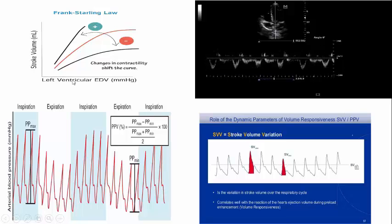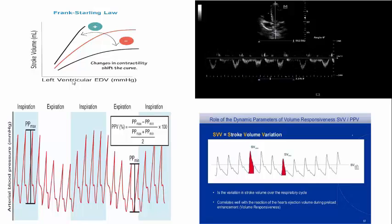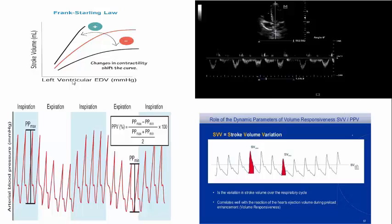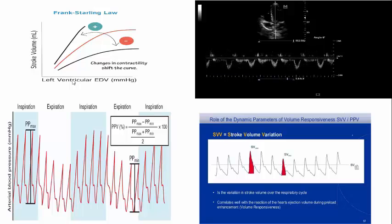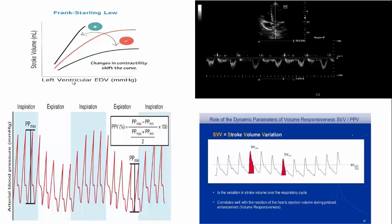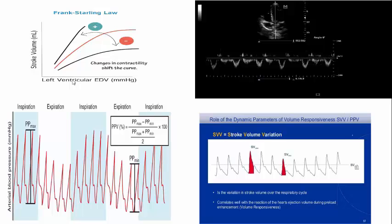How can we perform a preload challenge in an ICU patient on mechanical ventilation? You need special circumstances. First, you need a good tidal volume of 8 ml per kg. Second, the patient must be totally sedated with no spontaneous breaths at all. Third, no arrhythmia, because arrhythmia per se will lead to fluctuation of stroke volume and pulse pressure variation. Fourth, you do not need — meaning you must not have — acute cor pulmonale or acute right-sided heart failure, because if there is acute right-sided heart failure it will affect venous return to the left side.